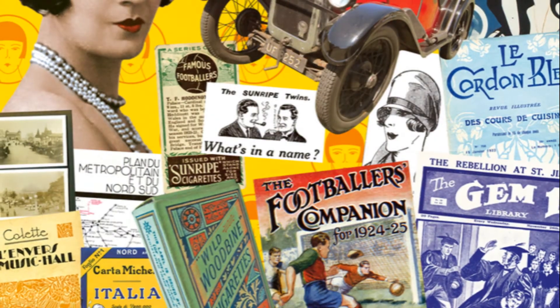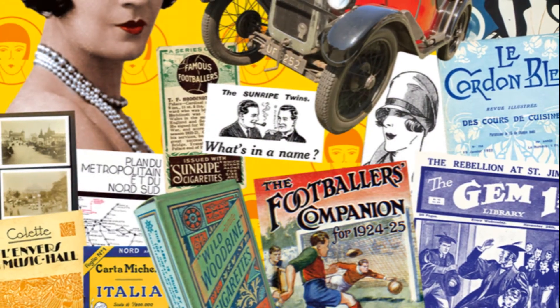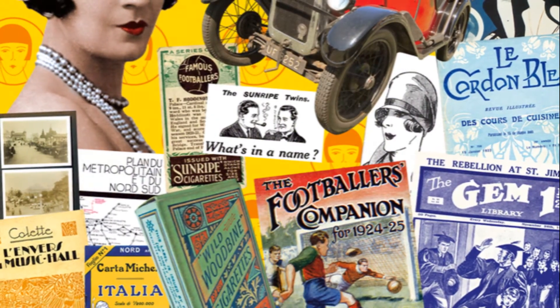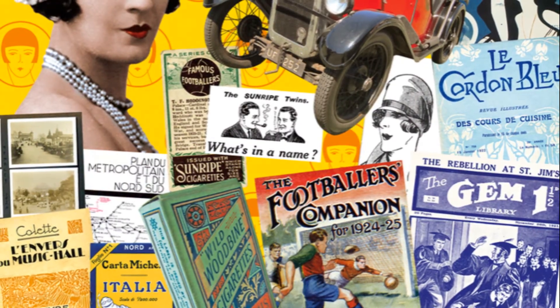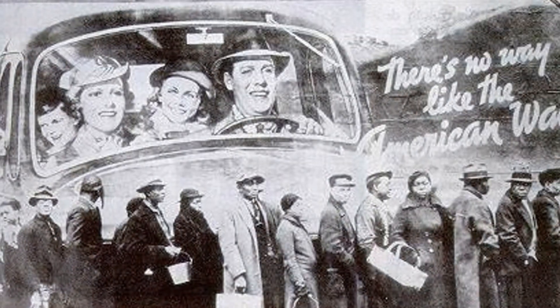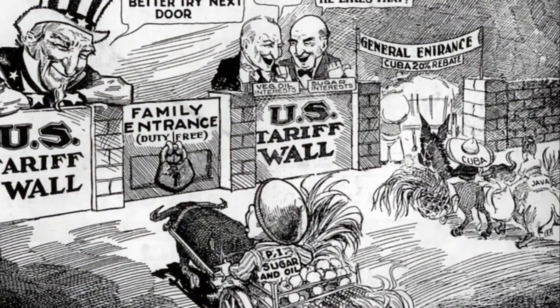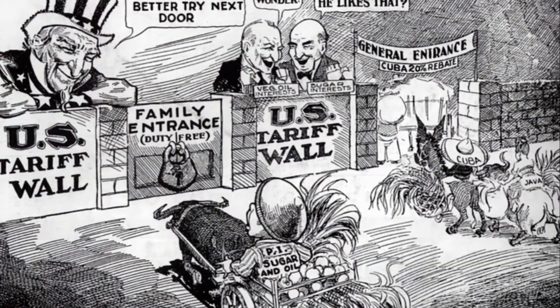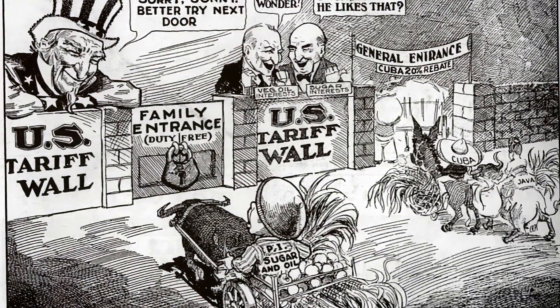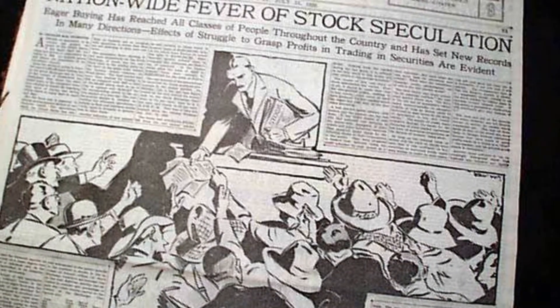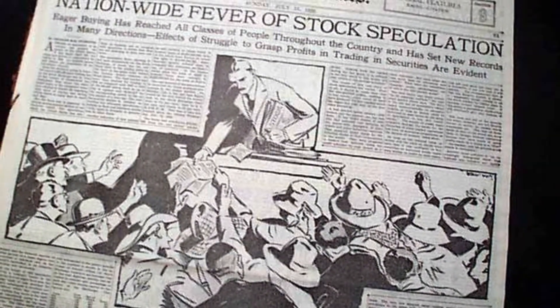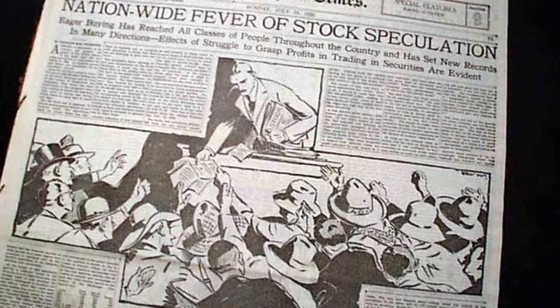The seeds of the Great Depression were sown in the 1920s. Overproduction, high tariffs, rampant stock market speculation, and unregulated banking set the stage for economic turmoil. U.S. companies produced more goods than the market could absorb. High tariffs stifled international trade, limiting markets for American goods. The stock market became a speculative bubble, with stock values tripling between 1920 and 1929, driven by unwarranted optimism.